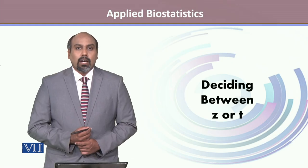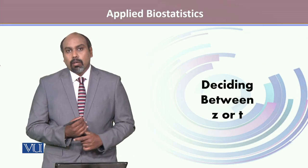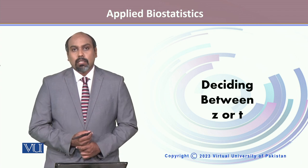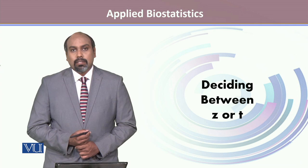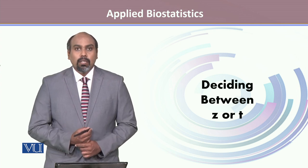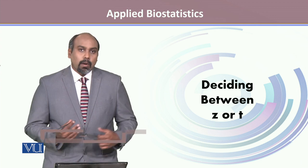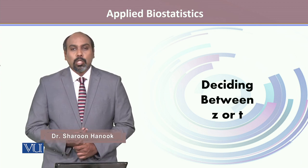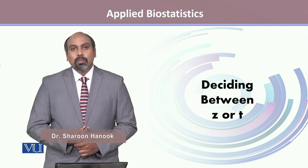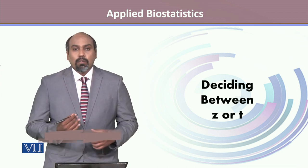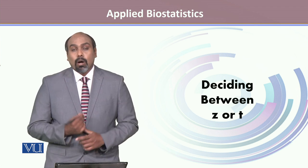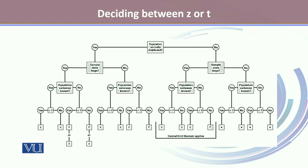While calculating confidence interval estimates, it's very important that we make a good choice about the reliability factor — whether it should be T or Z. In this module, we'll learn through a flowchart in what situations we will use a reliability factor from the T distribution, from the Z distribution, or if there's a need for another one. This flowchart will help us determine the right choice for the reliability coefficient.